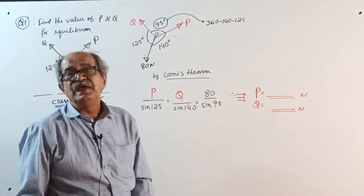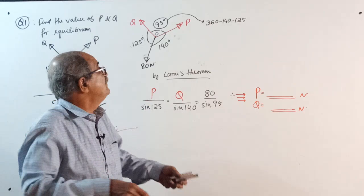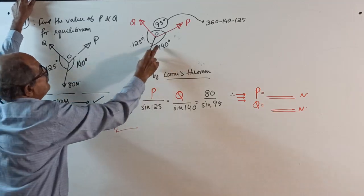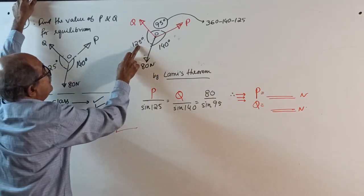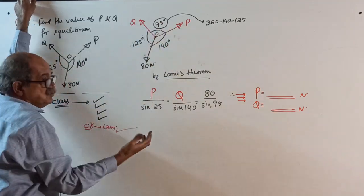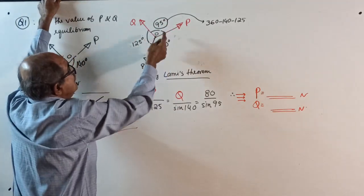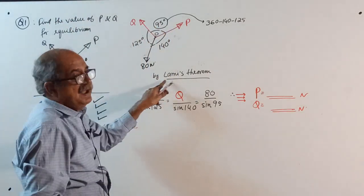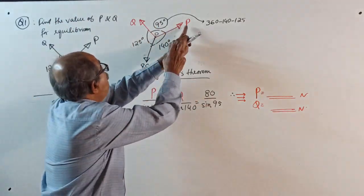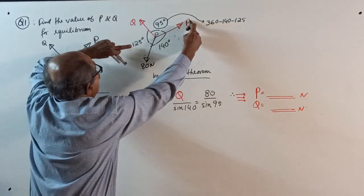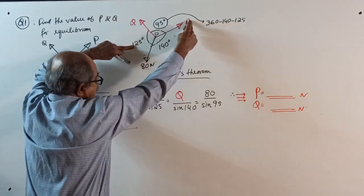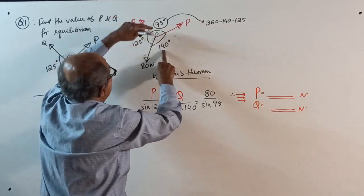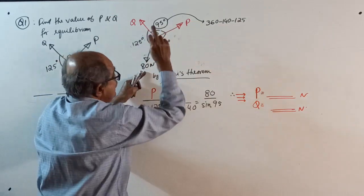In Lamy's theorem, we don't consider angles with the x or y axis — we want included angles. Here, one angle is 140 degrees, another is 125 degrees, so the third angle is 360 minus these two, which gives 95 degrees. By Lamy's theorem: P / sin(125) = Q / sin(140) = 80 / sin(95).